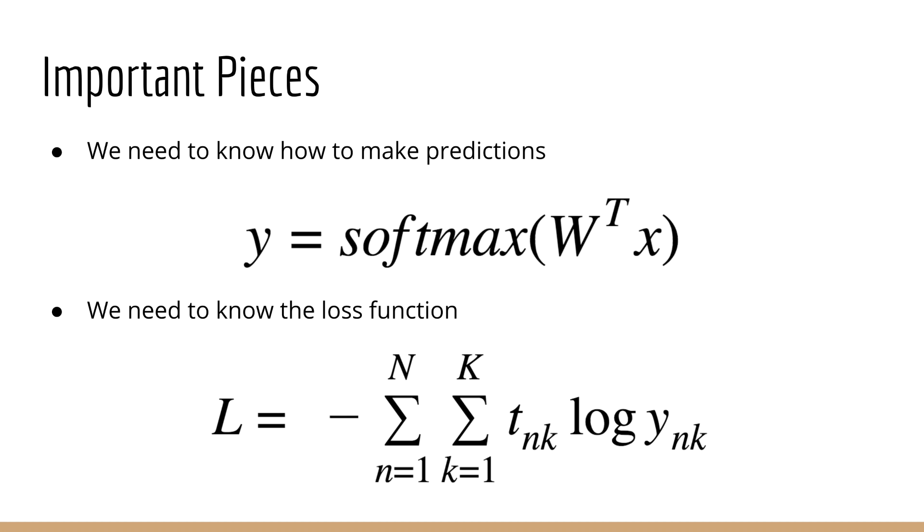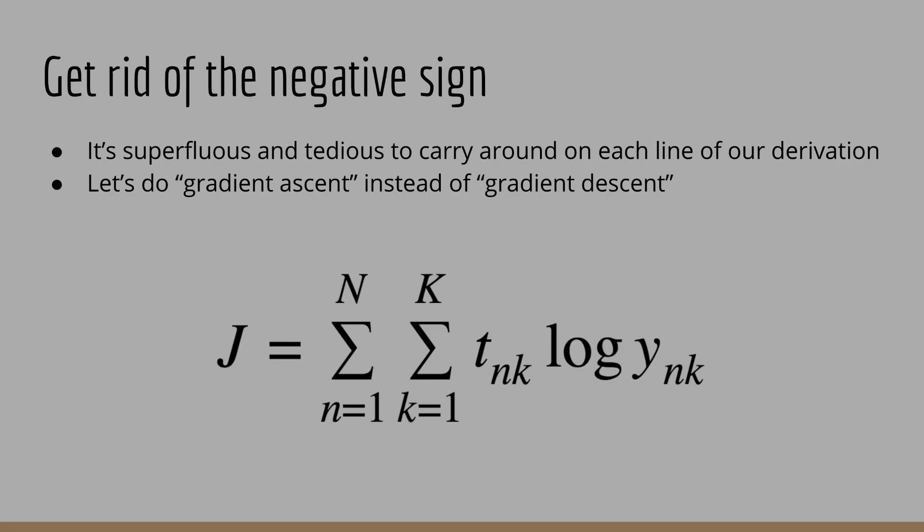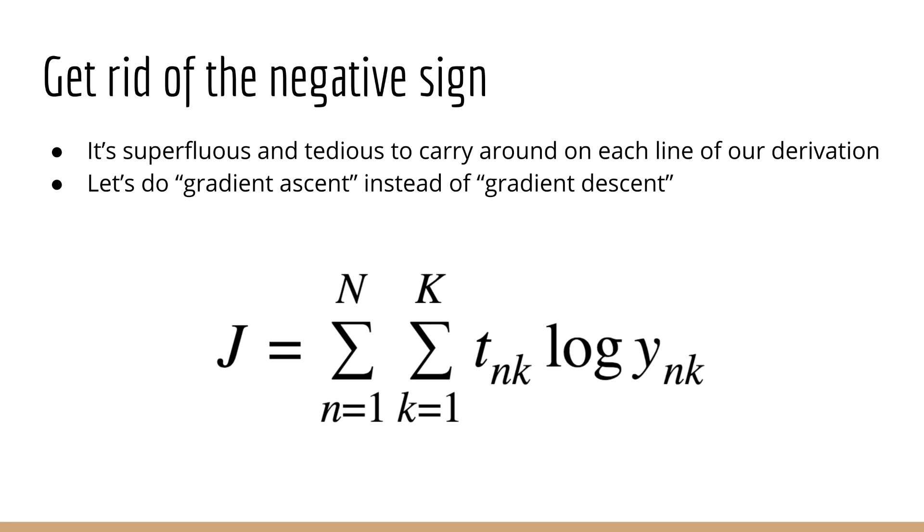First, we're going to start with all the pieces we need to do this derivation. Our prediction is y equals the softmax of W transpose x. Remember that we are now using the convention that y represents the model output and t represents the target. So the objective will be the sum over n and the sum over k, t of nk times log of y of nk. If you recall, we said earlier that this is the negative log likelihood, and it is also the multi-class or categorical cross entropy. As usual, our job is to minimize the loss L with respect to the weight vector W. As a side note, since the negative sign is somewhat superfluous, and all we'll end up doing is copying it over and over again, it's easiest just to drop it completely and work with an objective that we want to maximize rather than minimize. Of course, this is just the log likelihood of our model with respect to the data.